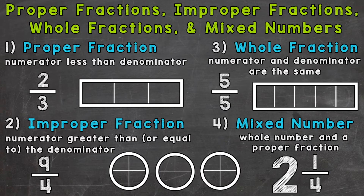Let's jump into number one: proper fractions. Proper fractions have a numerator that is less than the denominator — so the top number is less than the bottom. Proper fractions represent part of a whole or part of a group, and represent a value less than a whole. Our example is two-thirds, where the numerator is less than the denominator.